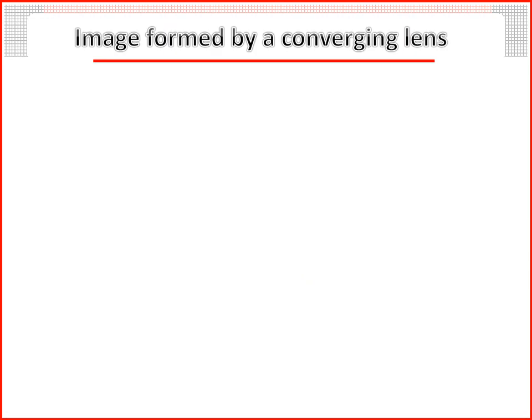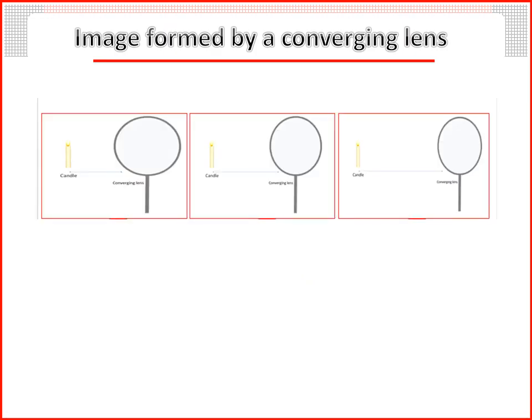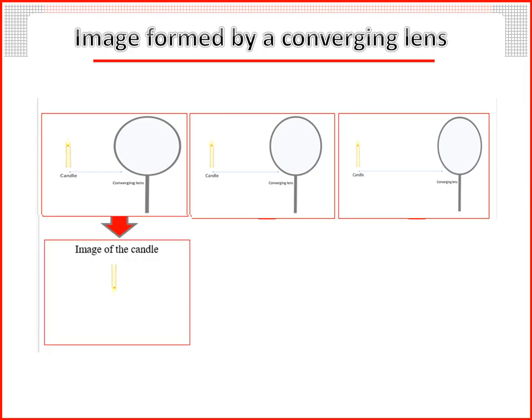Image formed by a converging lens: we observe a candle through a converging lens at different distances as shown in the figures. In the first figure, the size of the image is smaller than the size of the candle and the image is inverted. In the second figure, the size of the image is bigger than the size of the candle and the image is inverted.